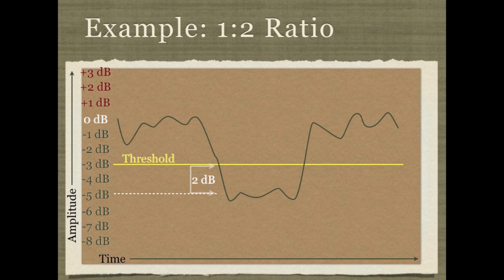If the expander is set to a 1 to 2 ratio, that portion of silence that's about 2 dB below our threshold will be turned down further so that now it's about 4 dB below our threshold.